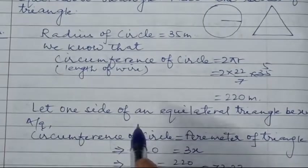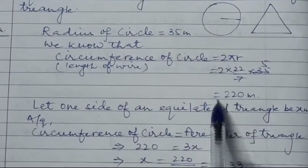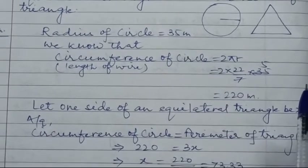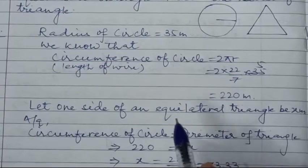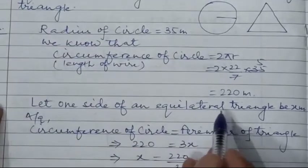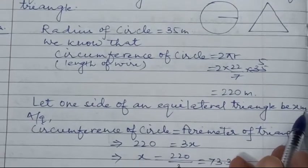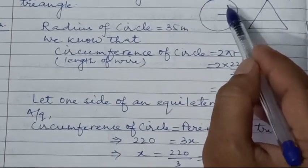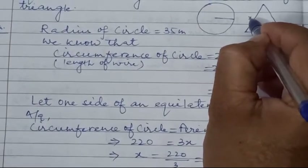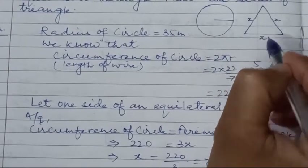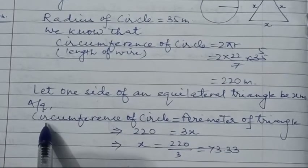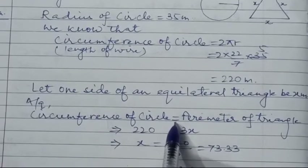Now let's proceed. This length of wire is bent into the form of an equilateral triangle. Let one side of the equilateral triangle be x meters. We assume each side of the triangle is x meters.